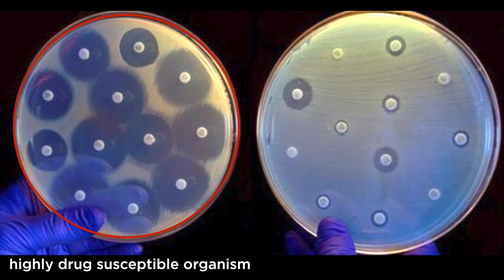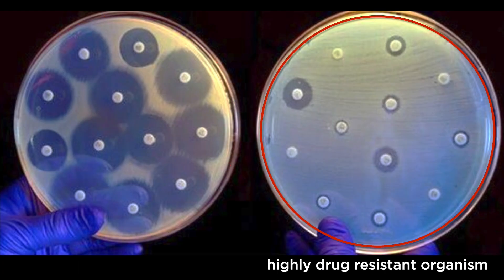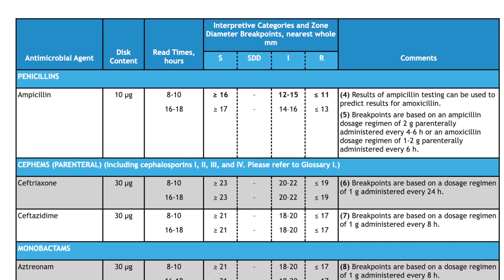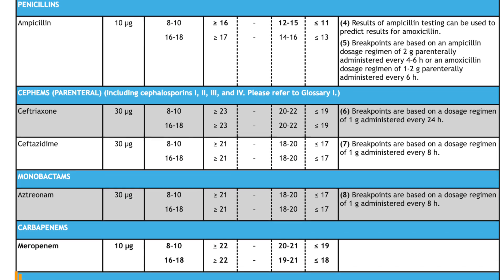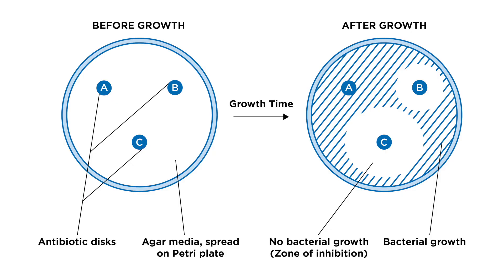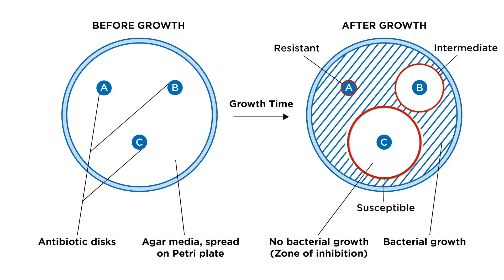The plate pictured on the left is of a highly drug-susceptible organism. The plate on the right shows a highly drug-resistant organism. Susceptibility test interpretive criteria, also known as breakpoints, are zone diameters established for each antimicrobial agent. The diameter of the inhibition zone determines if a microorganism is resistant, intermediate, or susceptible to a particular antimicrobial agent.